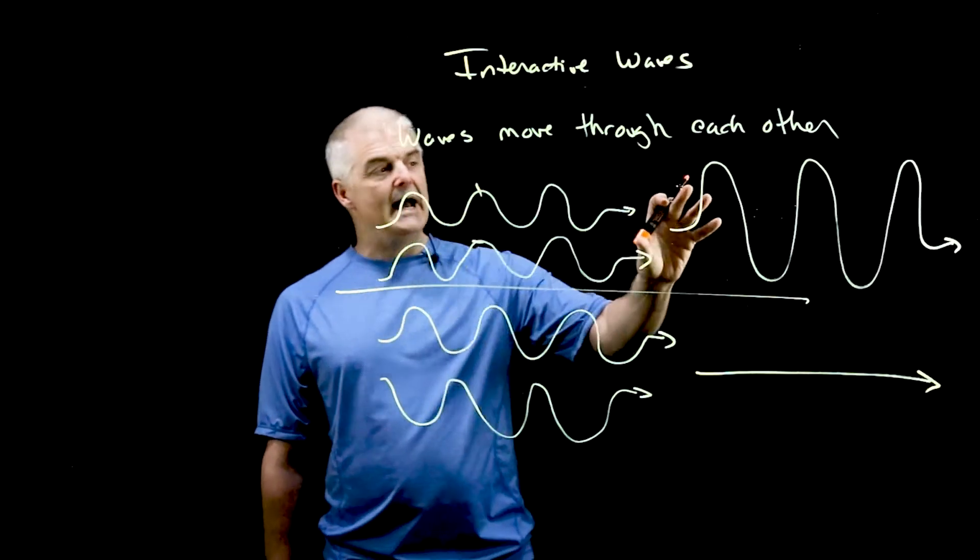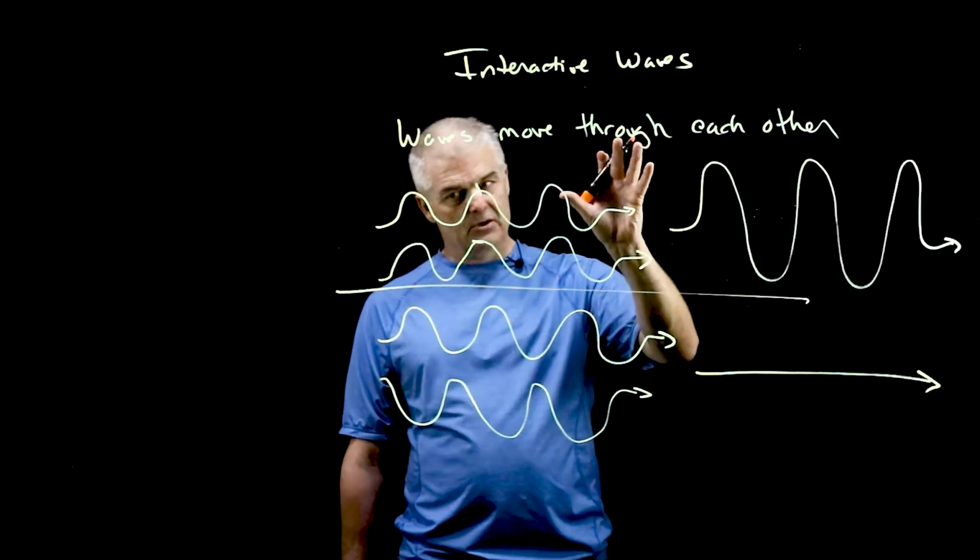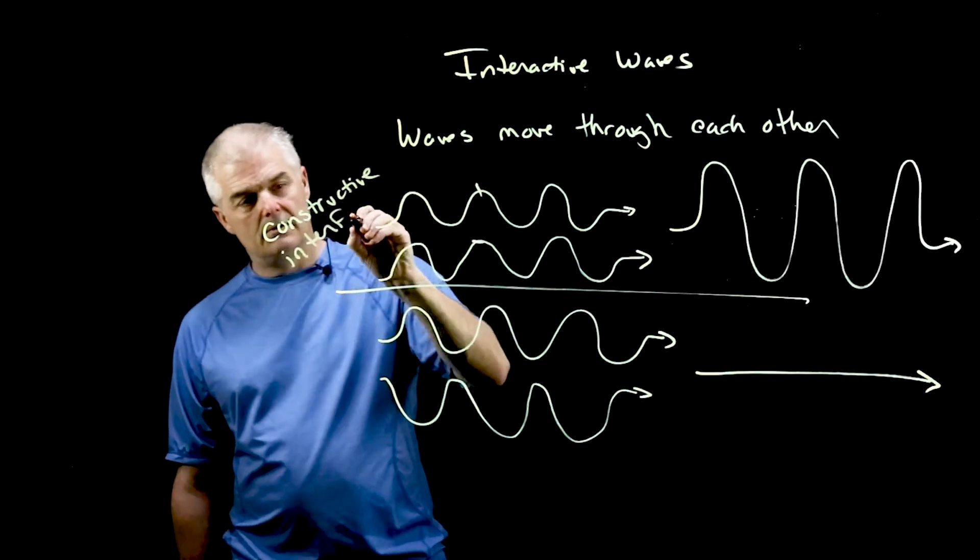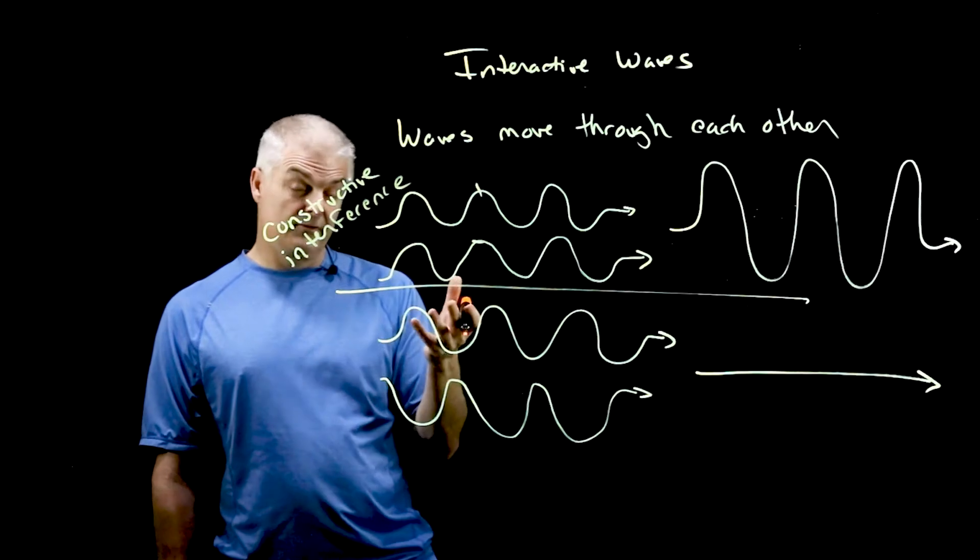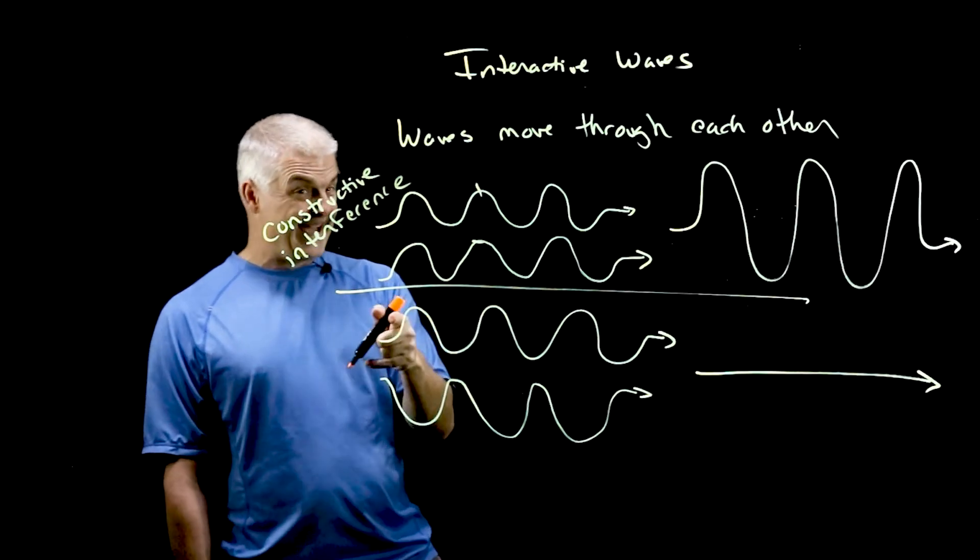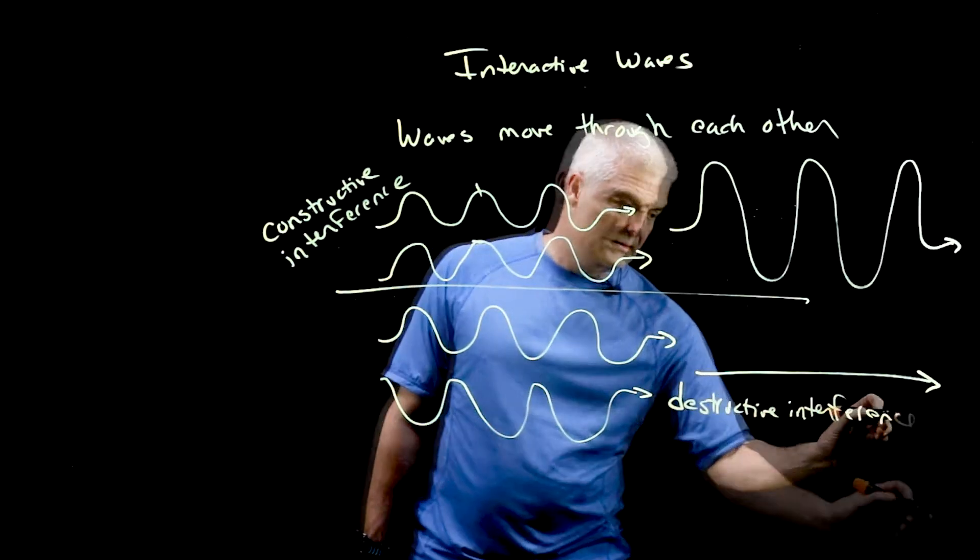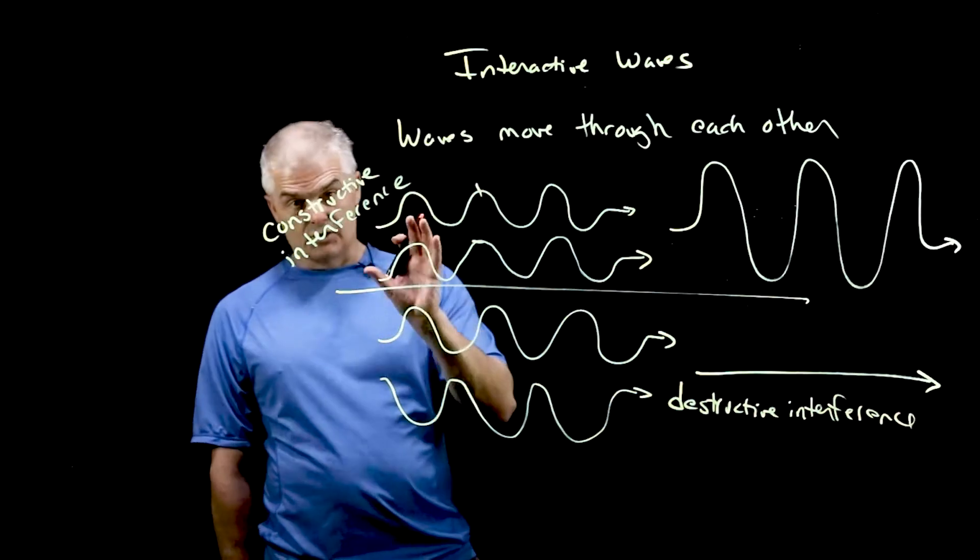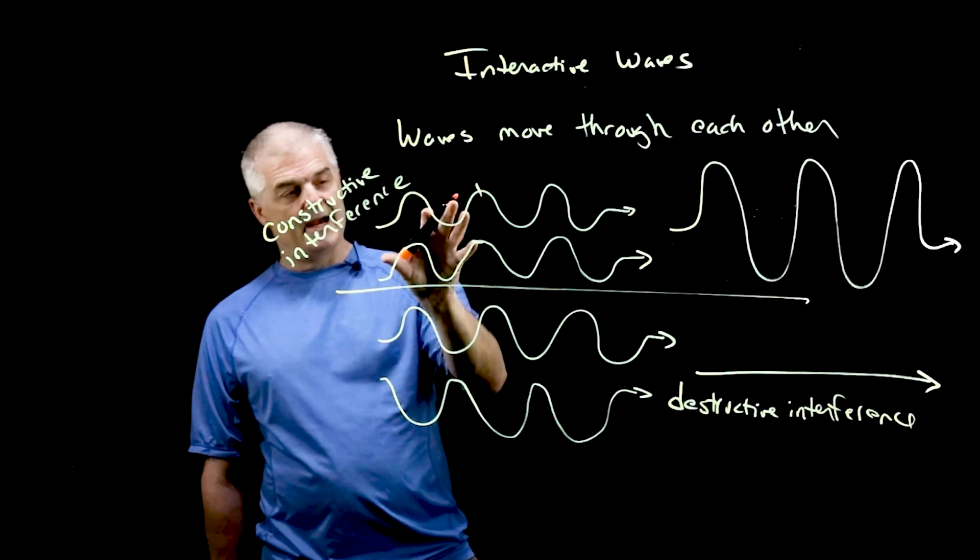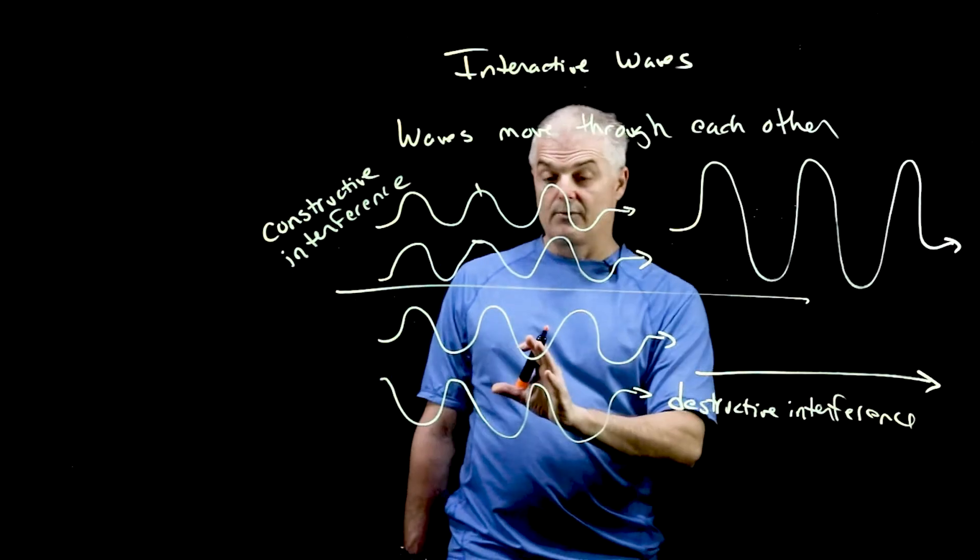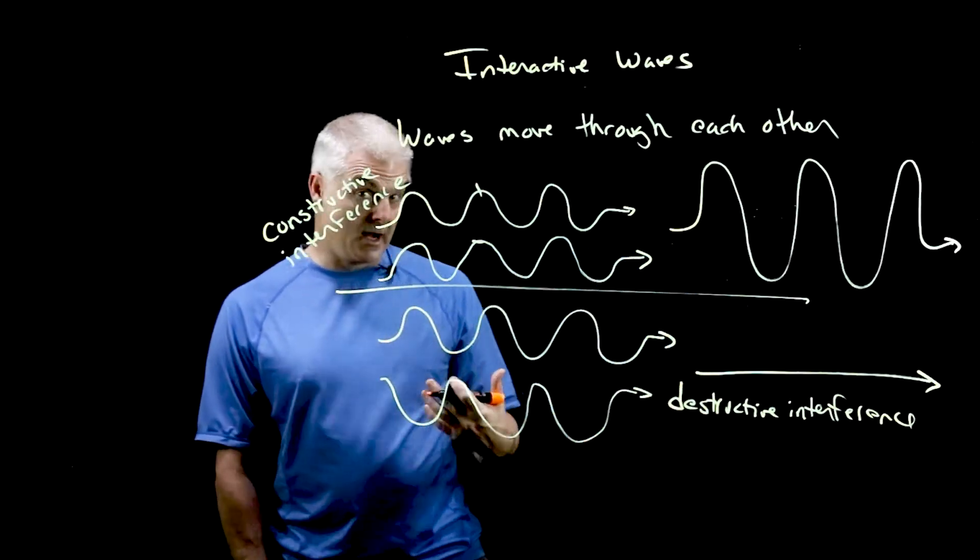When waves add together to make bigger waves, we use this term. We call it constructive interference. Makes sense, right? I'll bet you can figure out what I call it when they add together and they kill each other out. Destructive interference. So constructive interference is when you add waves and they make bigger waves. Destructive interference is when you add waves and they cancel each other out.